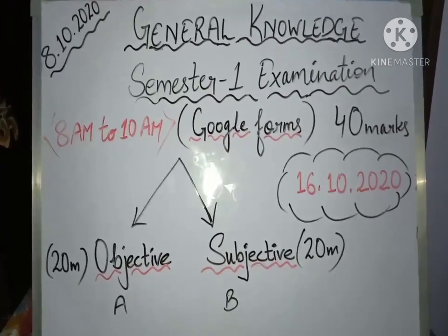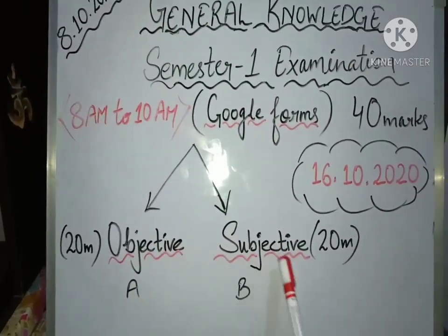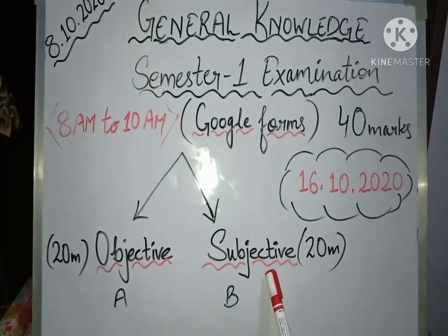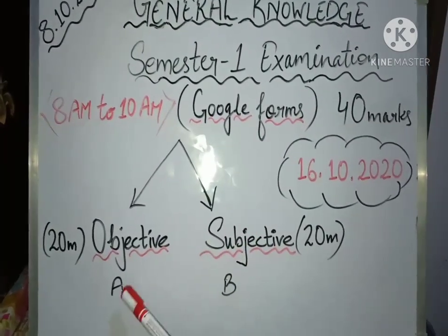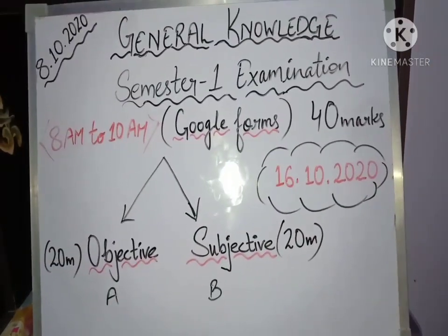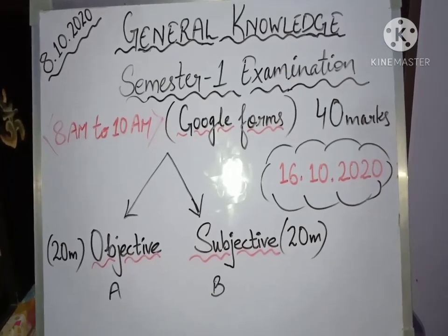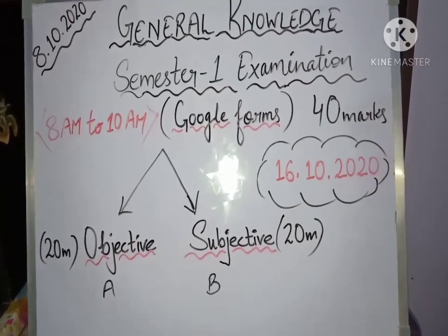Part A and part B. Part A will be objective type and part B will be subjective type. Both parts consist of 20 marks each. One more thing, you will get the link of this exam sharp at 7:55 a.m. in class WhatsApp group.